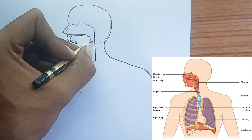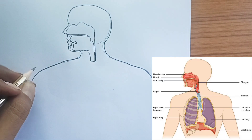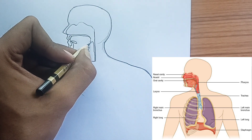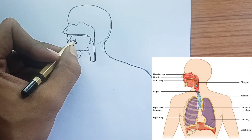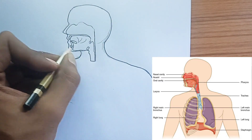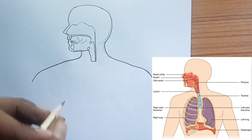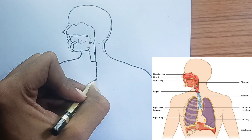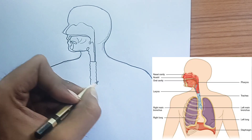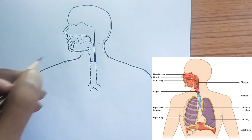Bronchioles: The tiniest bronchioles eventually lead to tiny air sacs called alveoli. These are the workhorses of the respiratory system. The alveoli are surrounded by a dense network of tiny blood vessels called capillaries. It's here that the crucial gas exchange takes place — oxygen from the inhaled air diffuses across the thin walls of the alveoli into the blood in the capillaries, while carbon dioxide from the blood diffuses into the alveoli to be exhaled.